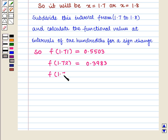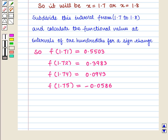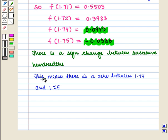f(1.74) = 0.0943. Similarly, f(1.75) = -0.0586. Here again we have a sign change between successive hundredths. This means there is a zero between 1.74 and 1.75.